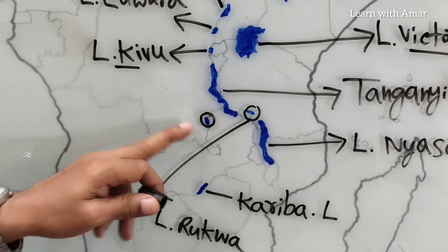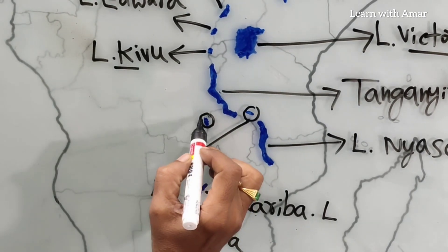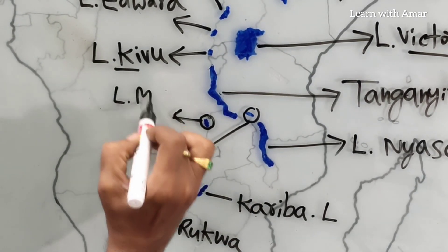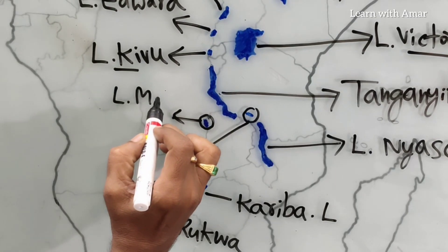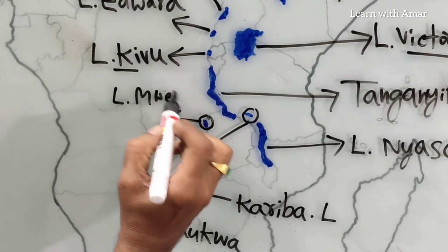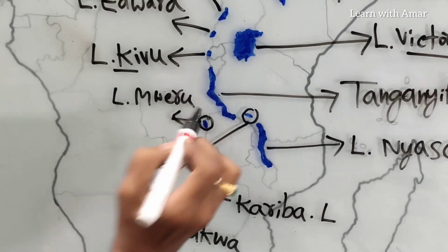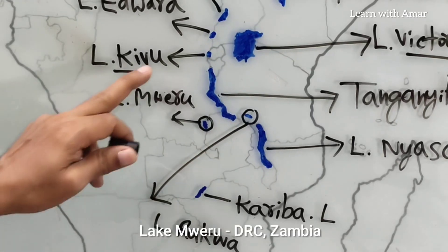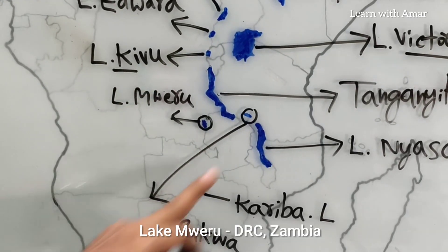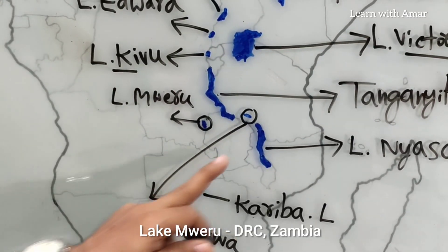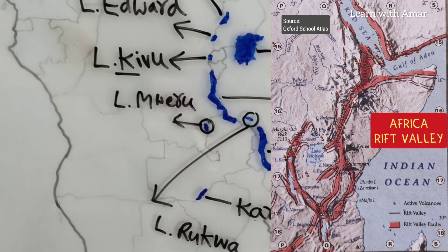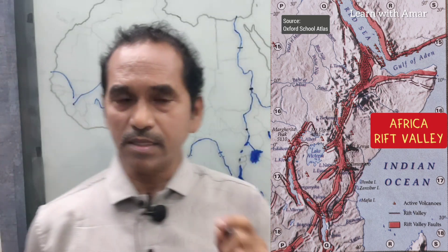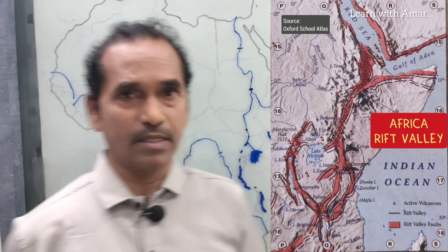This one is Lake Meru. Lake Meru is located between two countries: DRC and Zambia. We continue our discussion with rivers. Let us see rivers in Africa.